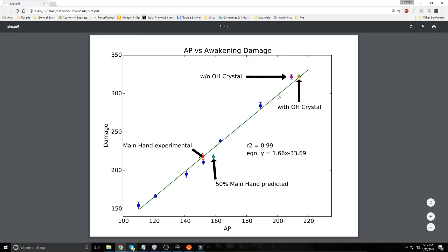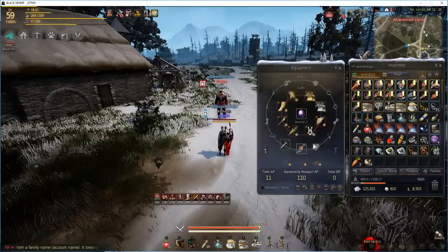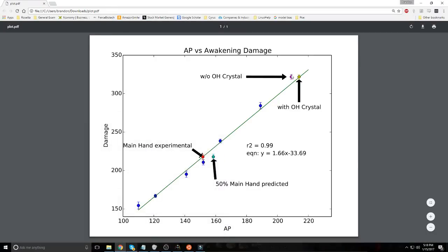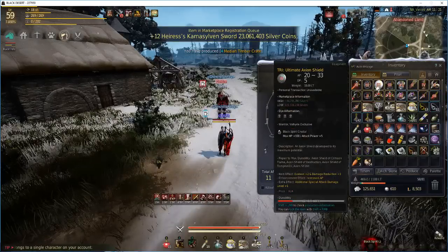Another interesting point to note is what I mentioned earlier, the effect of offhand crystals. So I have two points right here. If we assume that the offhand crystal from the awakening weapon damage does not contribute to the awakening weapon damage, we get the point I was just highlighting a minute ago. The offhand crystal I'm talking about is the one I have in my axion shield, which is 100 HP and attack power plus 5.